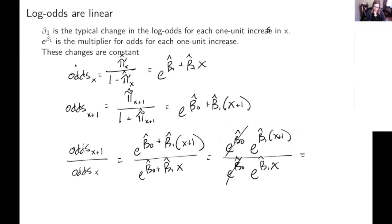And then I can actually do the same thing with the pluses turning into multiplication. So I can say this is e to the beta 1 hat X times e to the beta 1 hat, and that's over e to the beta 1 hat X. And again, these e to the beta 1 hat X's cancel. And it just ends up being e to the beta 1 hat.